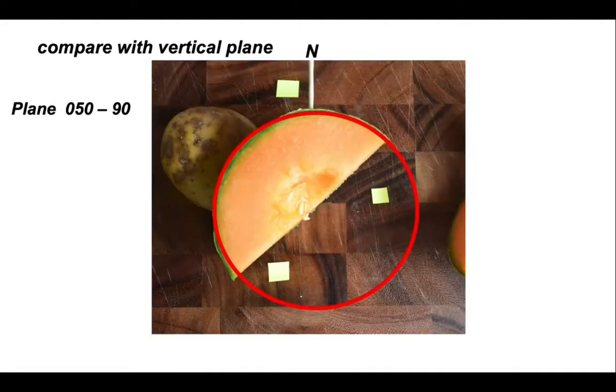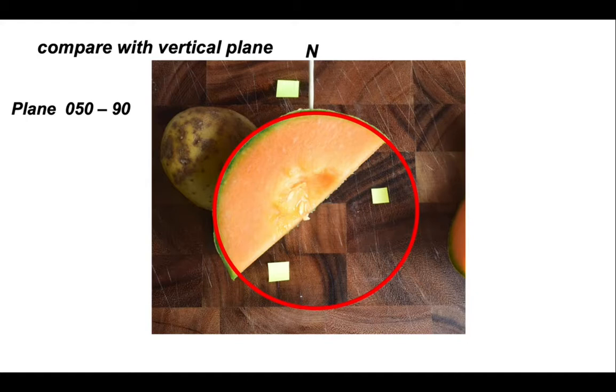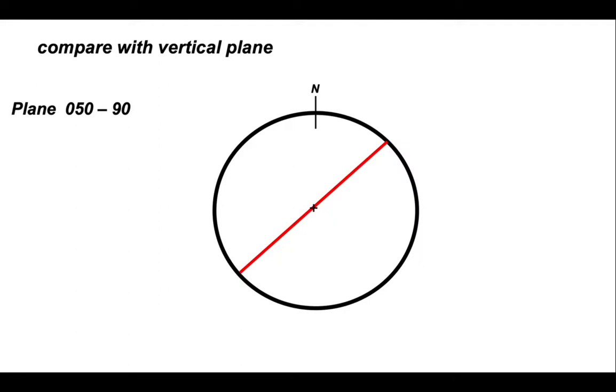Now what we've done is put a vertical cut through the melon with the same strike 050, but it's a vertical plane that's cut through it, so it has a dip of 90. It doesn't dip to a quadrant, it's straight down. This is represented by a straight line which is a great circle cutting straight across. If we take the melon away, this is what it looks like.